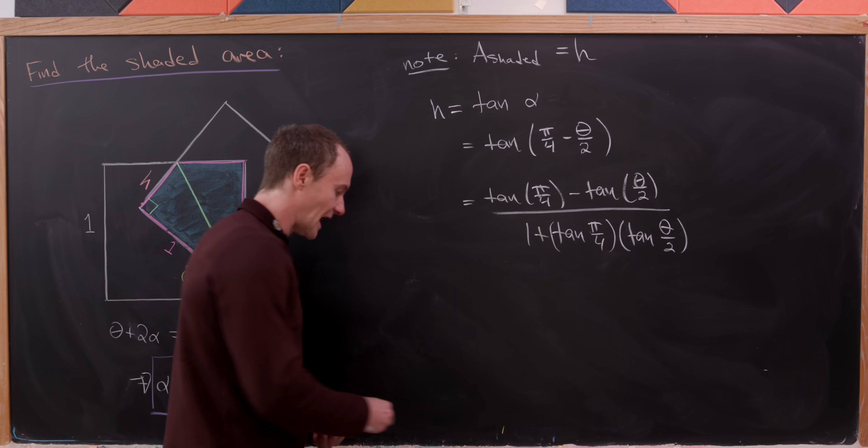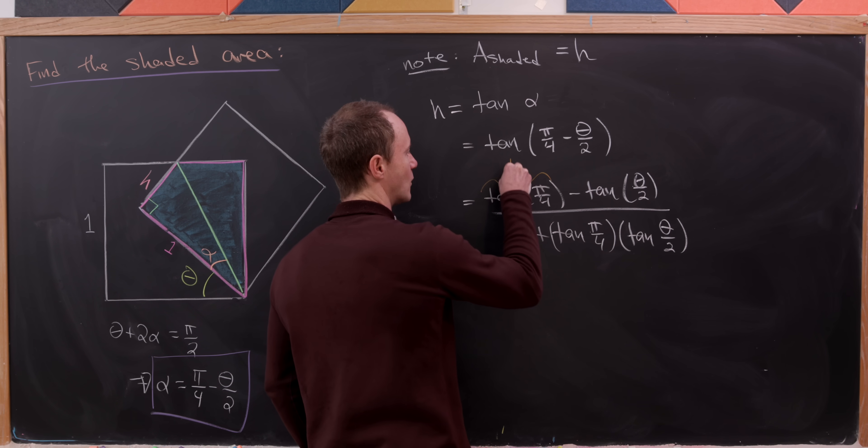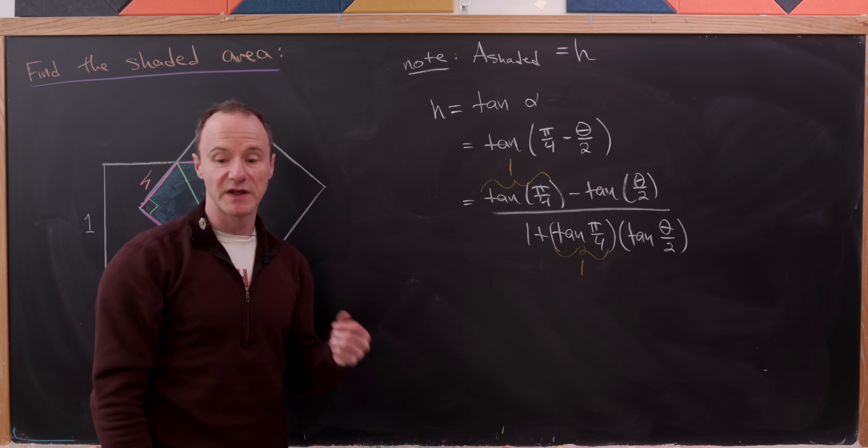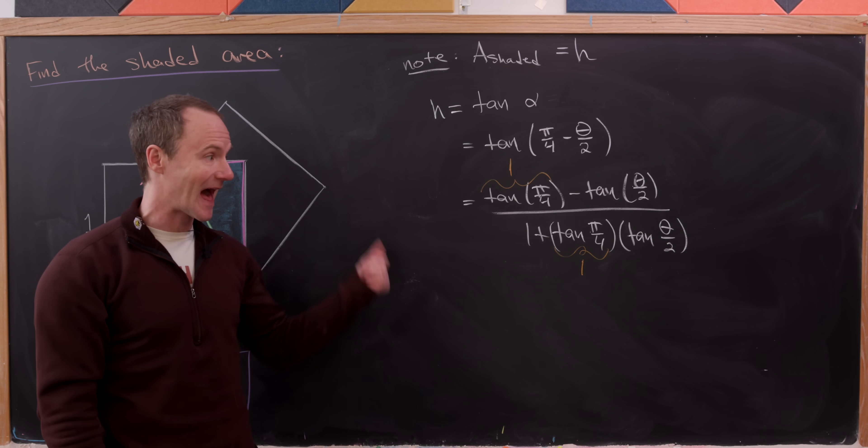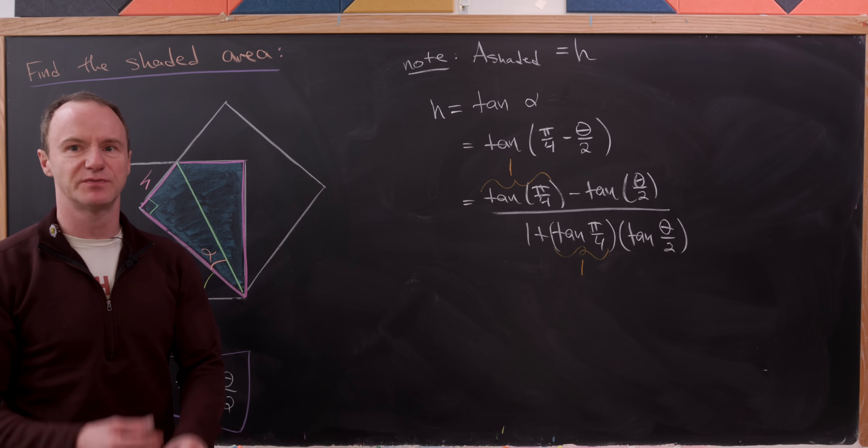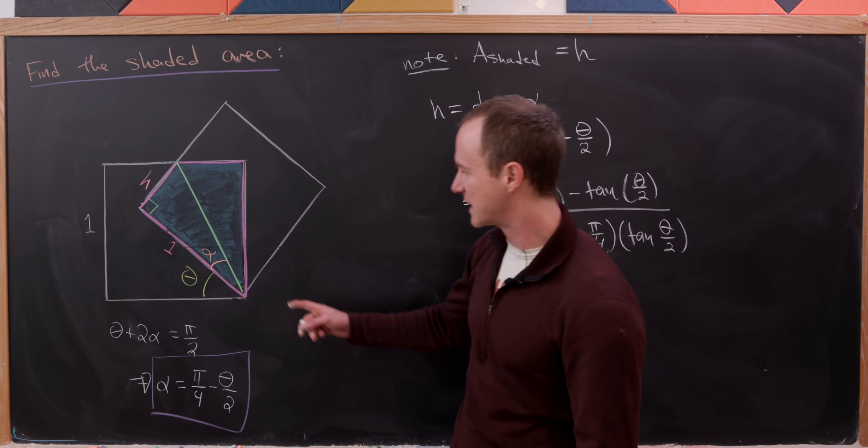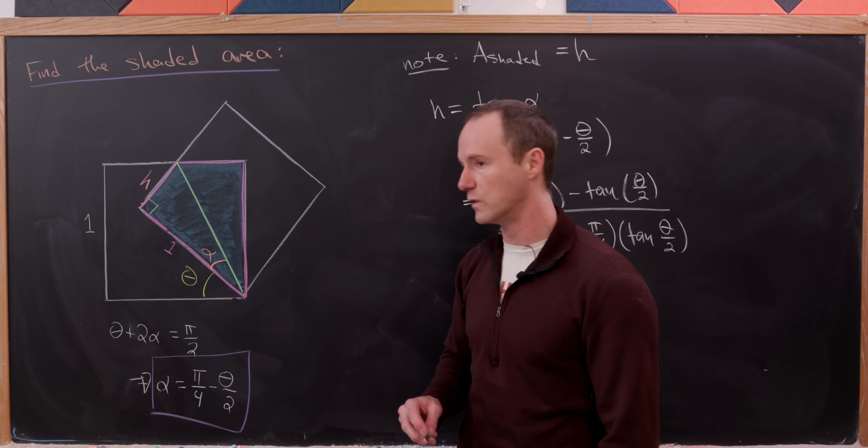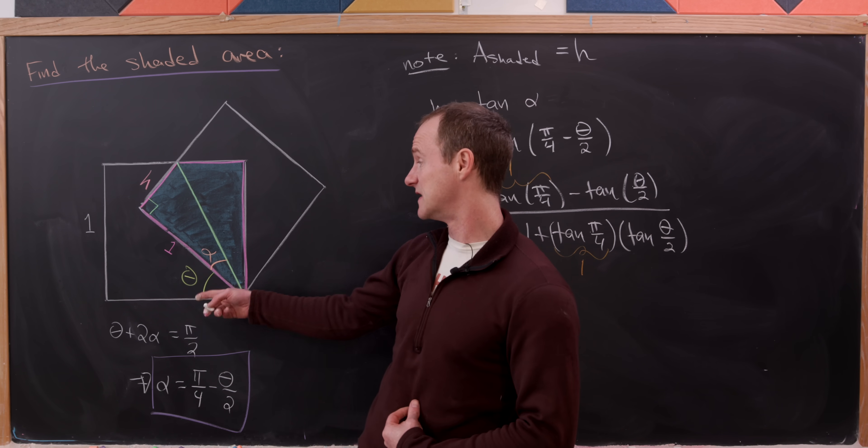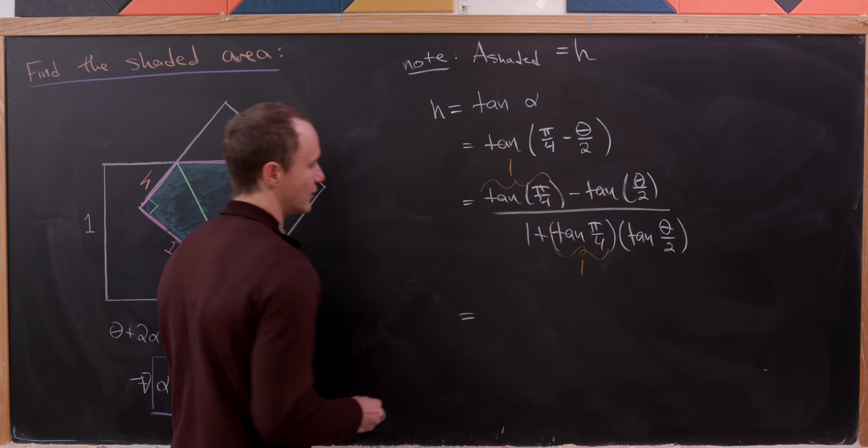Okay nice. Now we can use the fact that the tangent of π over 4 is one so we can replace each of those simply with one. Then after that we'll use the half angle formula for tangent to put everything in terms of theta. Now it shouldn't be too big of a surprise that our final formula here for this area will be in terms of theta since this theta has been undetermined. Okay so that's going to give us the following expression.